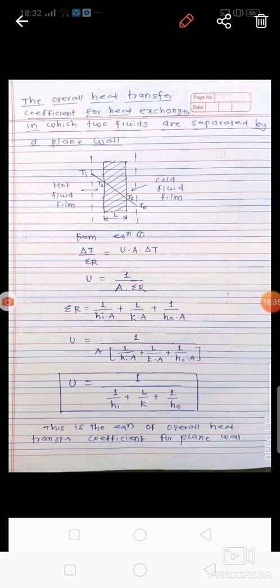Next, we find the overall heat transfer coefficient for a heat exchanger in which two fluids are separated by a plane wall. We consider a plane wall of thickness L placed between the hot fluid and cold fluid. Again, there are three resistances: the first is convection resistance as the hot fluid transfers heat to the wall surface by molecular motion.